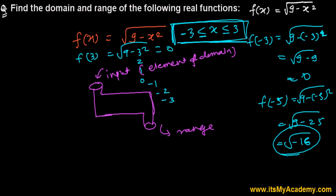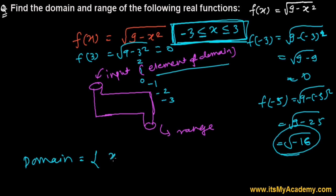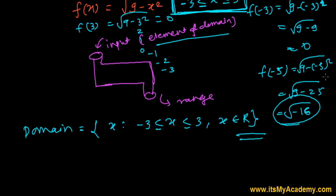Our real numbers must be between -3 and 3. Whatever we can input are the elements of the domain. So our domain is: x such that x is greater than or equal to -3 and less than or equal to 3, where x is from the real numbers.